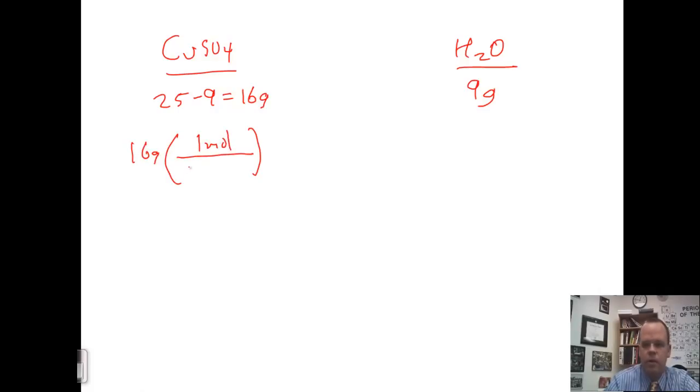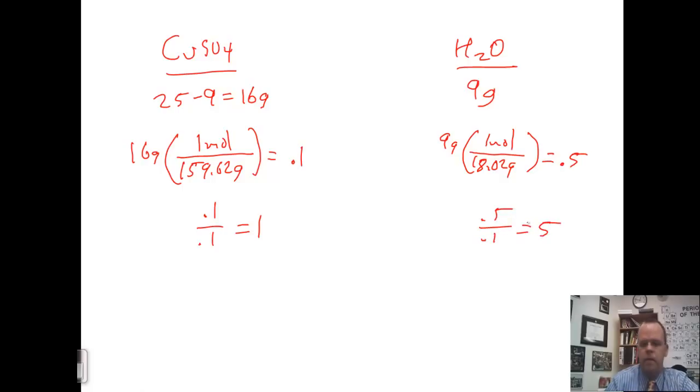So we need to convert each to moles. One mole. We take Cu, 63.55, sulfur, 32.07, and 4 oxygens at 16 each, and get 159.62 grams. This comes out to 0.1. Take 9 grams, do 1 mole over 18.02 grams, and we get 0.5. Divide each by the smallest one. So we get 1 to 5. So our compound is copper sulfate·5H2O. Or name-wise, that would be copper(II) sulfate pentahydrate.